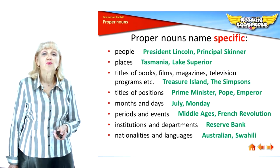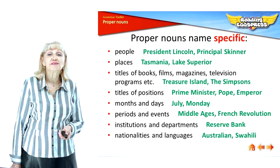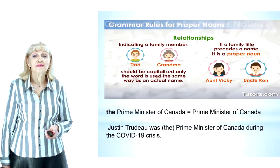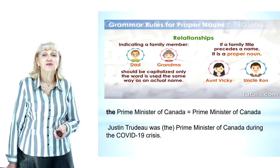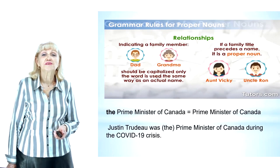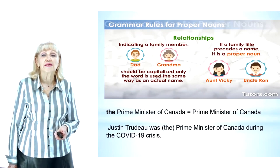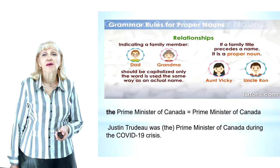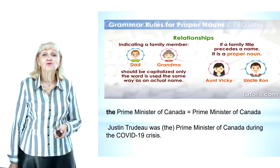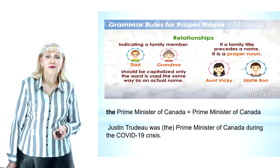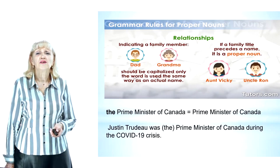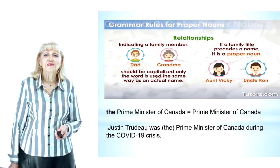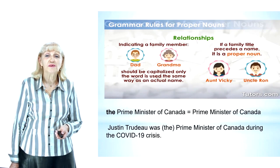Words indicating a family member — mom, dad, grandma, etc. — should have an initial capital letter only if the word is used the same way as the actual name, i.e., as a proper noun. For example: 'Can you please ask Dad what time we are leaving today?' Otherwise it should have lowercase letters, as a common noun: 'Has dad decided to leave early today?' If a family title precedes a name, it is a proper noun. For example: Aunt Vicky or Uncle Ron.